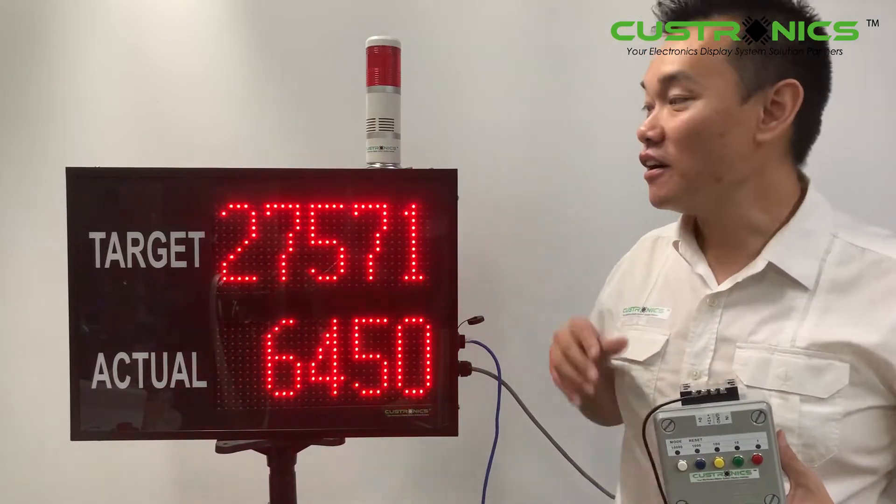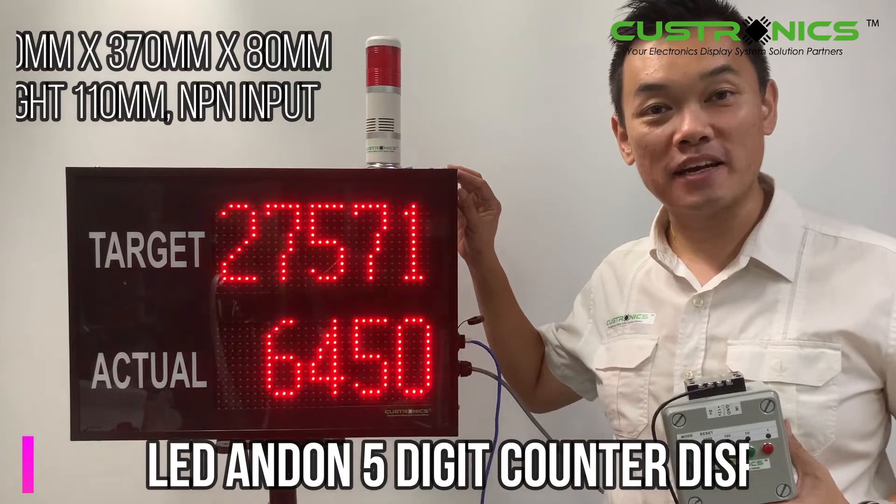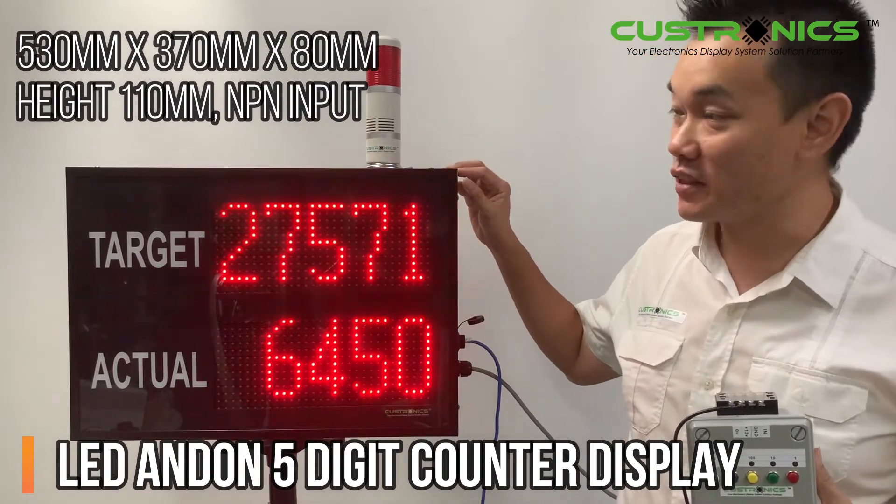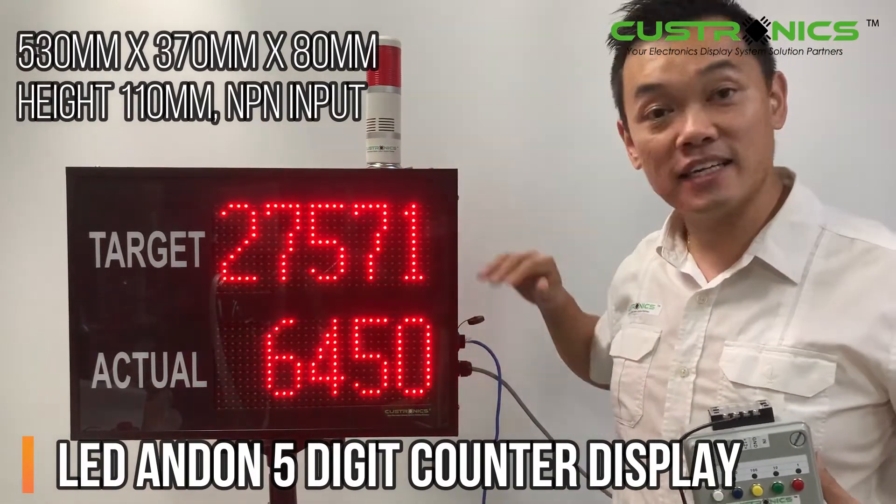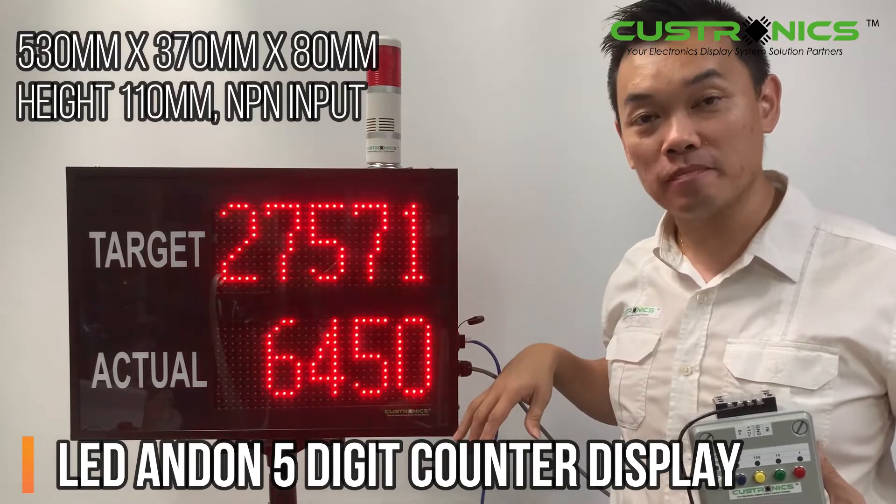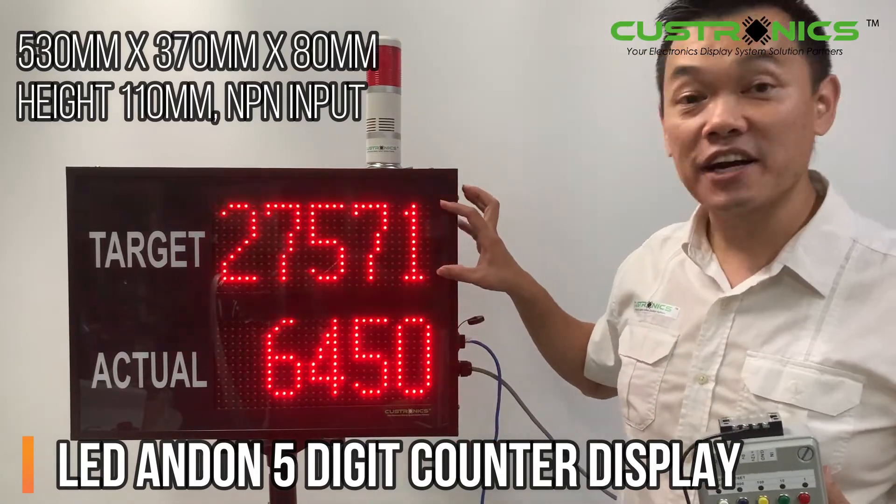In front of us, this is a five-digit production counter display panel. The width of the display is 530mm and the height is 370mm, and the character size is 110mm.